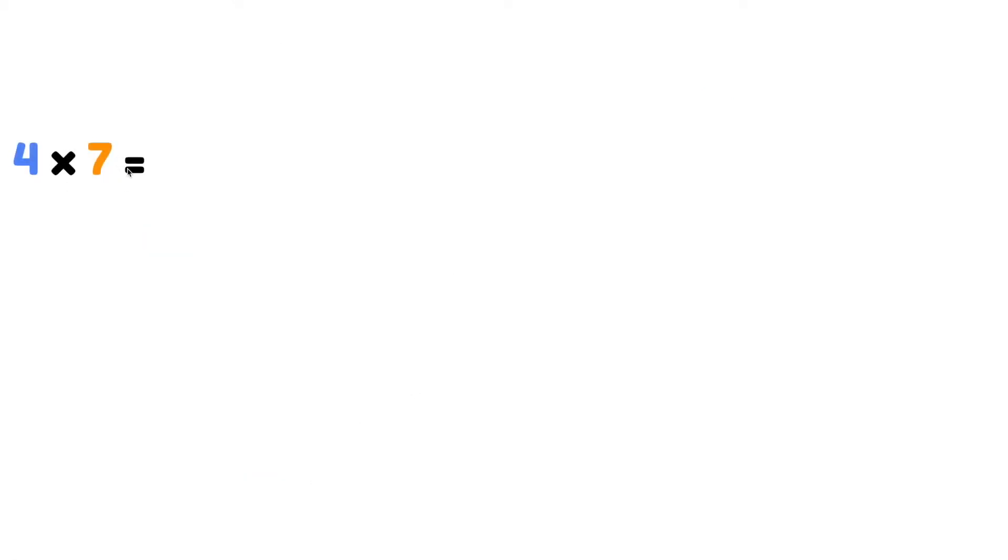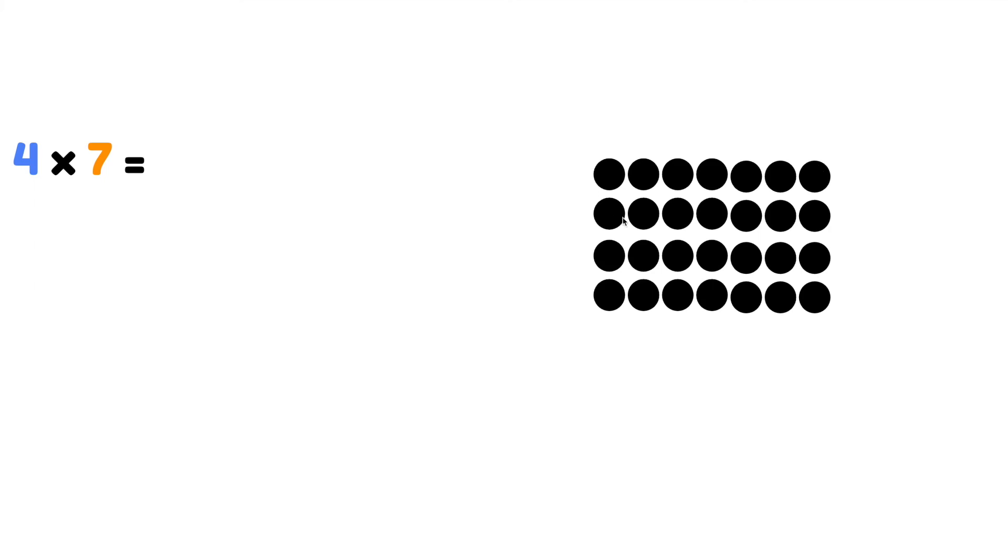Let's try 4 times 7. That means we need 1, 2, 3, 4 rows with 7 on each row. Now we can split this array in half with 2 rows on top and 2 rows below.